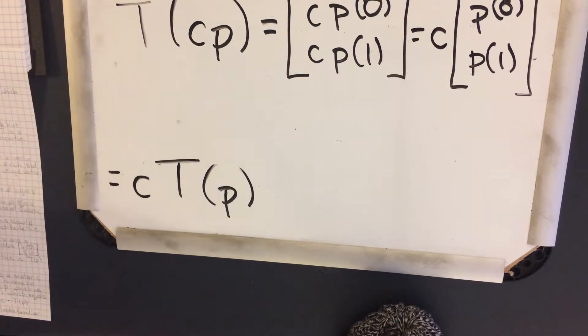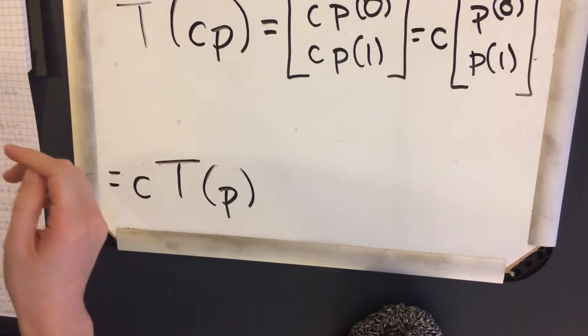So both of those properties seem to be fulfilled, which would indicate that T is a linear transformation from P₂ to R².